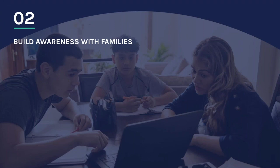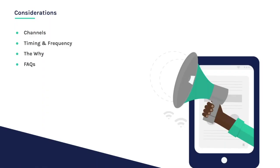Section two: build awareness with families. Now that we've covered resources to support one-to-one communications with families, we also want to touch on the importance of sending mass communications that will notify families of the upcoming outreach efforts and help the community know what to expect. Engagement from families will be highest when direct outreach is preceded by a handful of broadcast messages to the community.